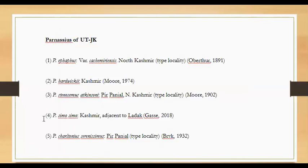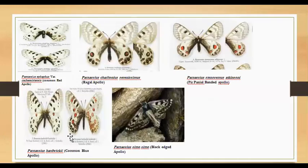Only five Apollo butterfly species are seen in Jammu and Kashmir Union Territory. Earlier, with Ladakh included, there were 12 Parnassius species. The five are: Parnassius epaphus (Common Red Apollo), Regal Apollo, Banded Apollo, Pir Panjal Banded Apollo, Common Blue Apollo, and Black-edged Apollo.